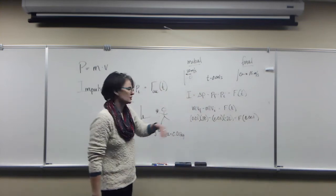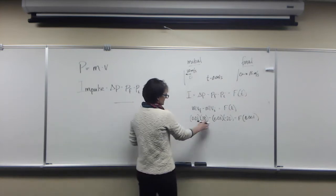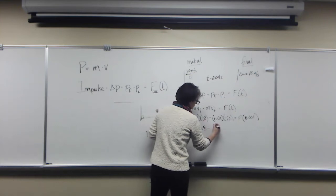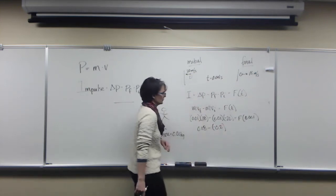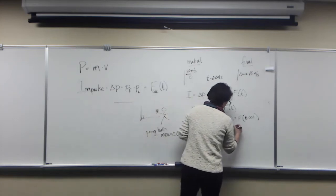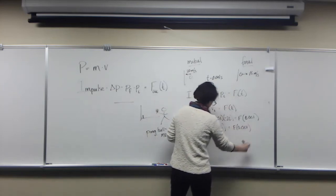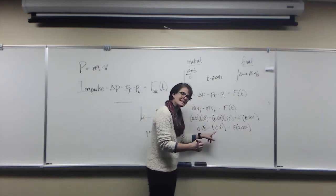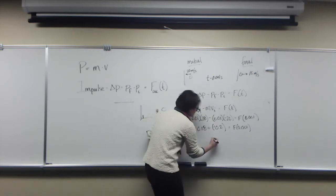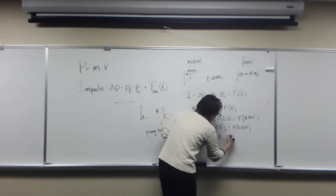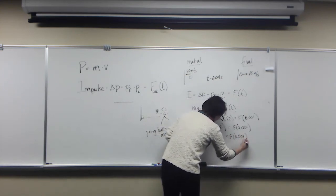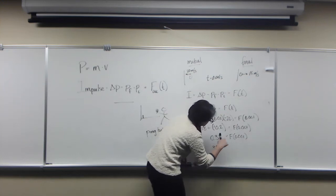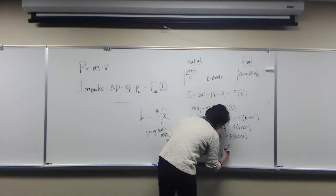So 18 times 0.01 is 0.18 minus a negative 0.2. That equals the force times 0.001. So 0.18 minus a negative 0.2 is adding them, so we have 0.38 is equal to the force times 0.001. And we get 380 is equal to our force.